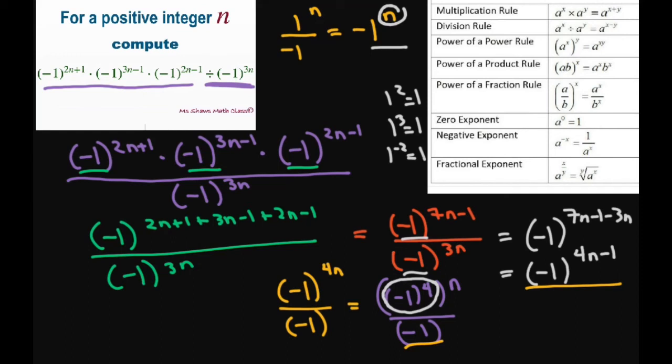So this part right here is just going to equal 1. So you're going to have 1, but you still have this negative that you do after you do your exponents. So our final answer is just going to equal negative 1.